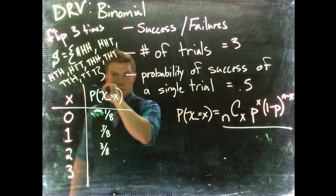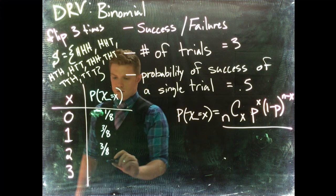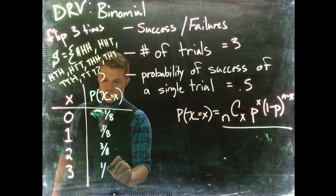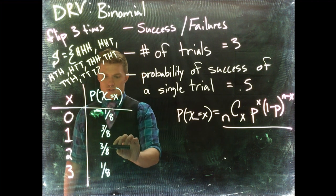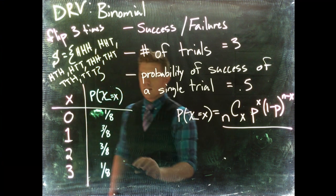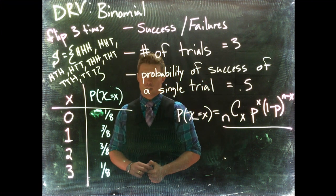And how many times do we see three tails? We've got one. And if you check this out, hey, we did it right because one-eighth plus three-eighths is four-eighths plus three-eighths is seven-eighths plus one-eighth is eight-eighths. So our probability mass function adds up to one. So that's really good.